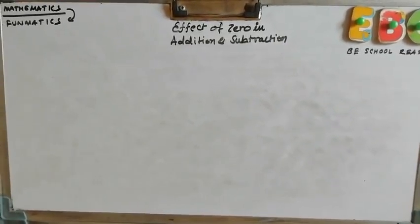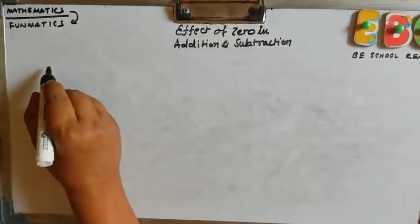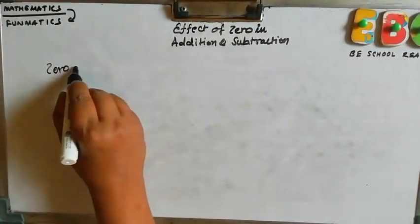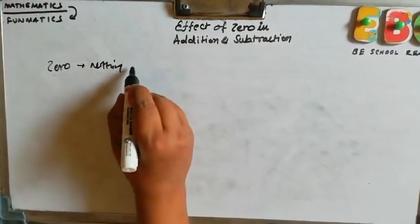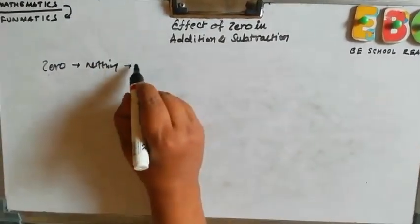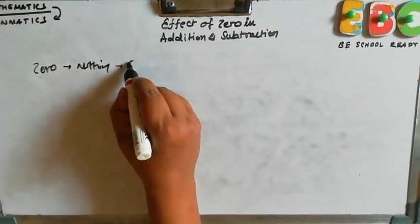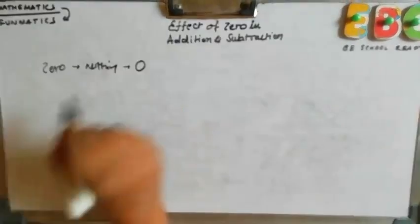So, first question arises, what is zero? Zero means nothing. In mathematical, we will represent nothing or zero as this.